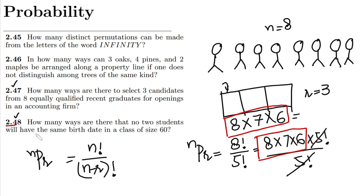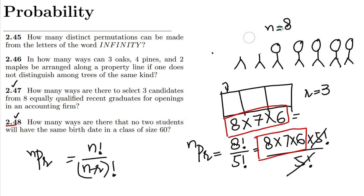The statement for question 2.48 is: how many ways are there that no students will have the same birth date in a class of size 60? So we have a total of 60 students in a class and we have to arrange them in such a way that no two students have the same birth date. Let me clean the board and show you how to approach this kind of question.